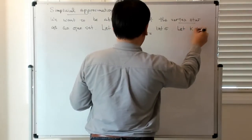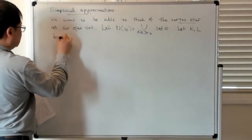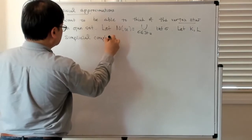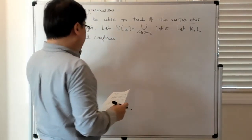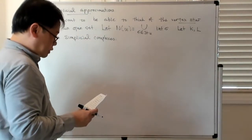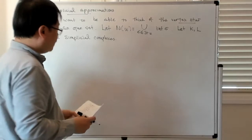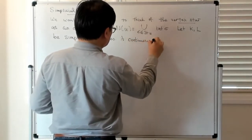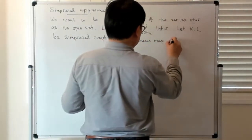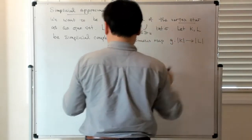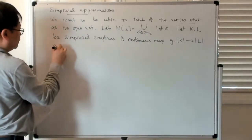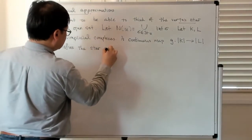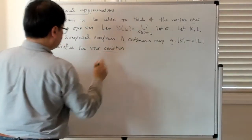So let K and L now be simplicial complexes. We want to say something about a continuous map from the underlying space of K to the underlying space of L. So continuous map, let's call it g from the underlying space of K to the underlying space of L — it satisfies the star condition